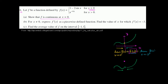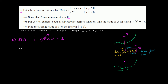So let's think about whether all of these things equal each other. First, the value of the function: f of 0 uses the first case, since that applies when x is less than or equal to 0. So f of 0 equals 1 minus 2 sine of 0. Sine of 0 is 0, so 2 times 0 is 0, and 1 minus 0 is 1.